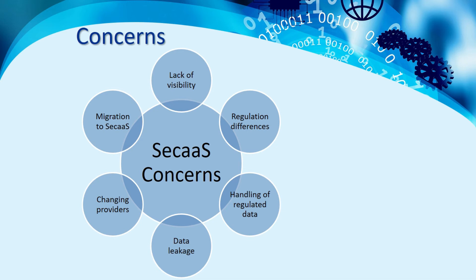Data leakage from one cloud to another is a concern not unique to SECaaS, but the highly sensitive nature of security data means SECaaS providers should be held to the highest standard of multi-tenant isolation and segregation. Changing providers may seem easier than swapping out on-premises hardware, but organizations may be concerned about lock-in due to potentially losing access to historical data needed for compliance or investigative support. Migration to SECaaS for organizations with existing on-premises legacy security controls must be a well-planned exercise.